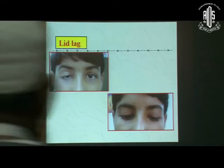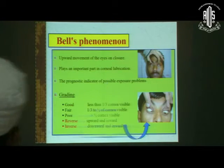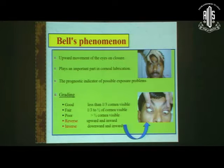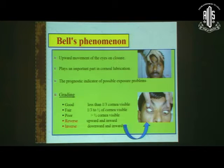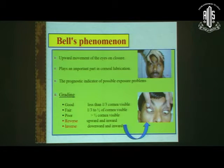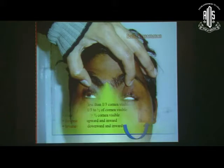Lid lag helps differentiate congenital and acquired. Bell's phenomenon is another important consideration. If it is reverse Bell's — an upward and inward movement — or inverse — downward and inward — that is not a contraindication for surgery because corneal exposure is not significant. The only contraindication is poor Bell's phenomenon, where more than half of the cornea is visible.